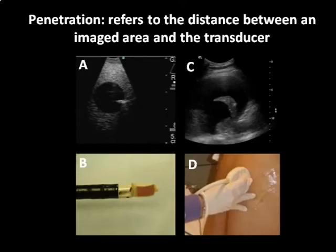Depth of penetration also depends on the size of the transducer. As the size of the transducer increases, the depth of penetration also increases. Here, a relatively superficial penetration depth of 5 cm is achieved using the EBUS transducer. A large transthoracic transducer, such as the one used for thoracentesis, has a 15 cm penetration depth.